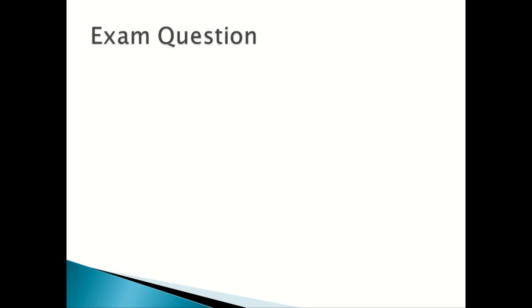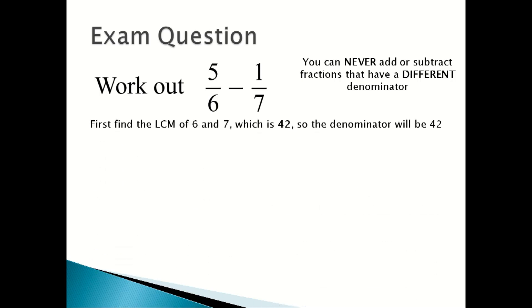Now we're going to look at an exam-style question. Work out 5/6 - 1/7. Always remember, you can never add or subtract fractions that have a different denominator. You first find the LCM, or lowest common multiple, of 6 and 7, which is 42, so the denominator of the fractions will be 42.